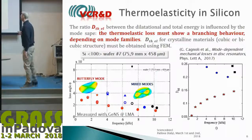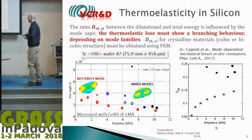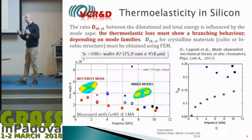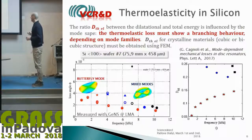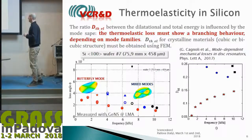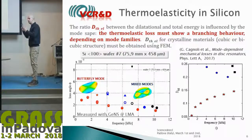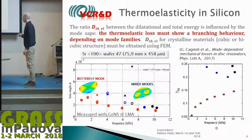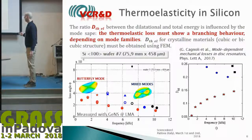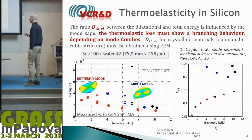The dilution factor depends on the shape of the modes. For a family of modes with similar shapes—for instance, butterfly modes—you find a curve representing that family, shown as red stars. There are other families of mixed modes, which causes the loss peak, the bi-peak, to branch into several parts due to the effect of the dilution factor. Measurements at LMA on a silicon disk show exactly this branching of the loss angle due to thermoelastic damping from the different mode shapes.